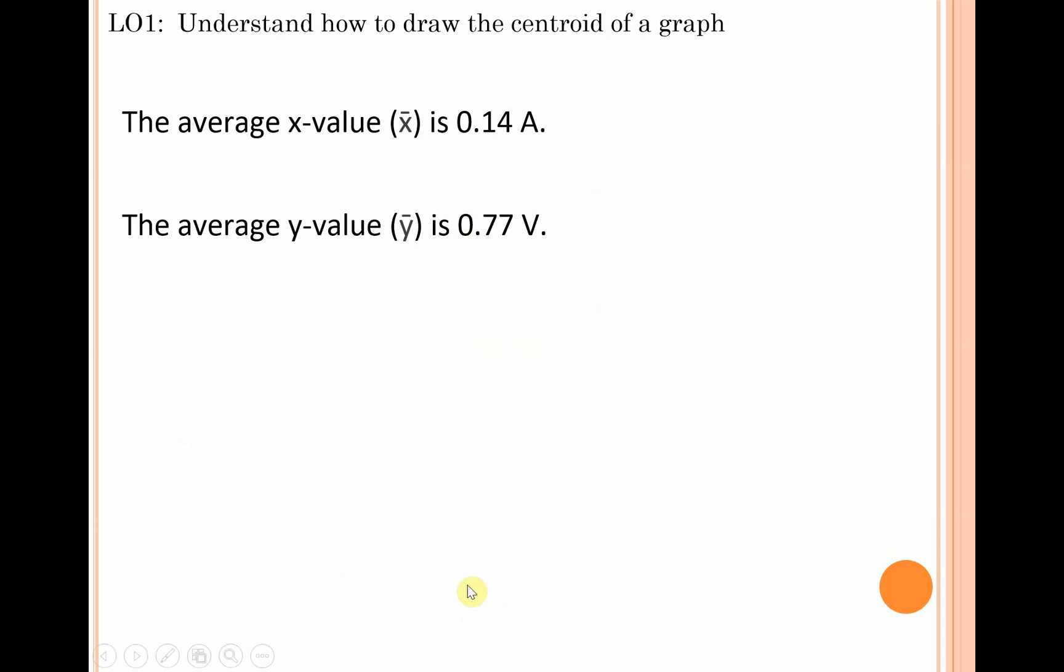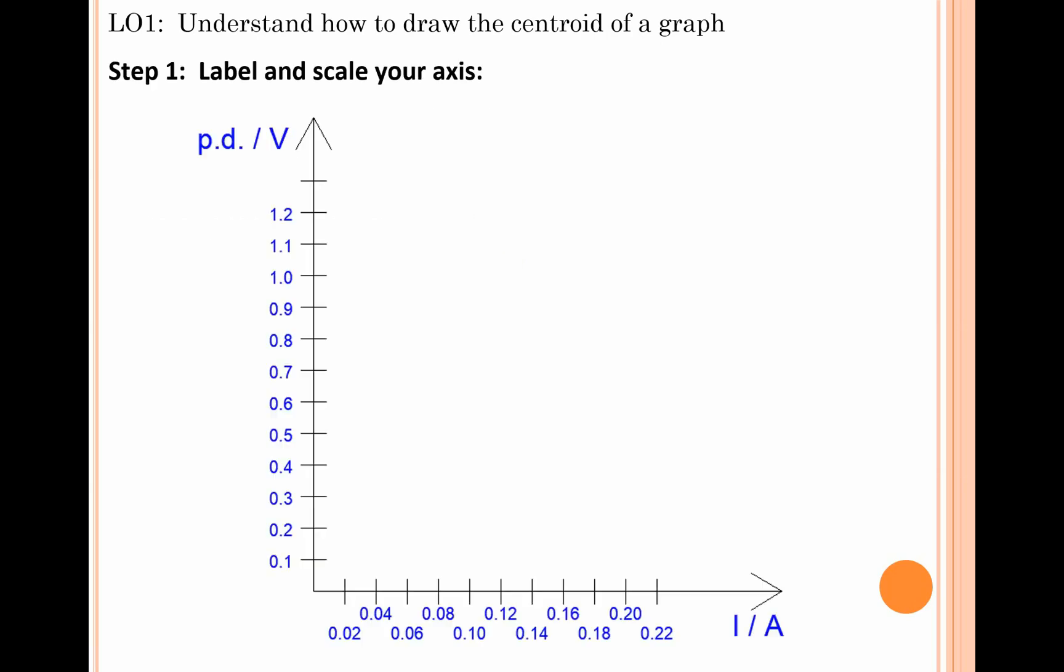When you've undertaken that process, you should find that the value of x̄ is 0.14 amperes and the value of ȳ is 0.77 volts. To get those values, you add all the x-values together and divide by the total number of values to get the mean. Similarly, add all the y-values together and divide by the total number of results.